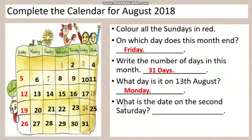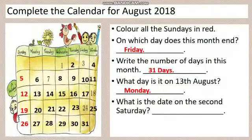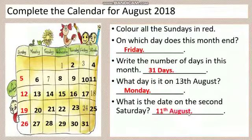What is the date on the second Saturday? We have all Saturdays listed — the first Saturday and the second Saturday. The second Saturday falls on which date? 11th August. So the answer is 11th August.